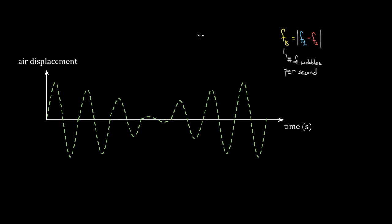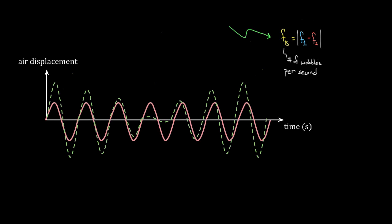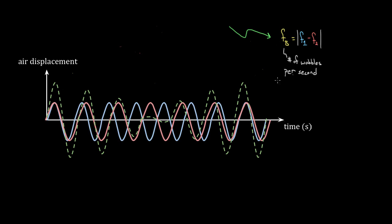In this video, I want to derive this formula right here. This is the formula for beat frequency. The way you get beats or beat frequency is by overlapping two waves that have different frequencies.